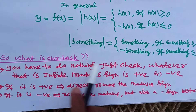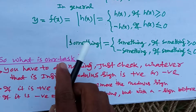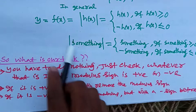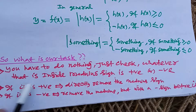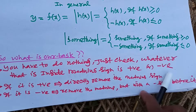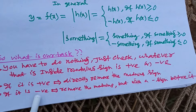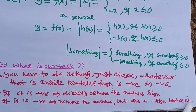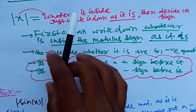So what is our task? You have to check whatever is inside the modulus sign — whether it is a positive quantity or a negative quantity. If the quantity inside the modulus sign is positive, directly remove the modulus sign. If the quantity inside is negative, remove the modulus sign but don't forget to put a negative sign before it. That's the whole story.